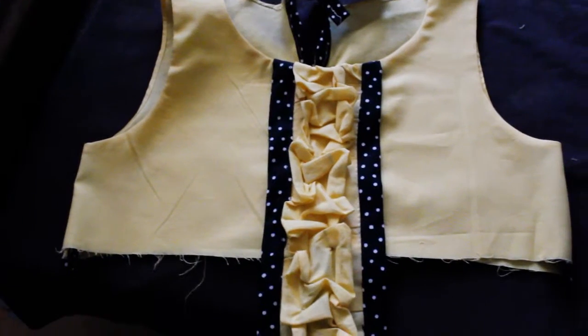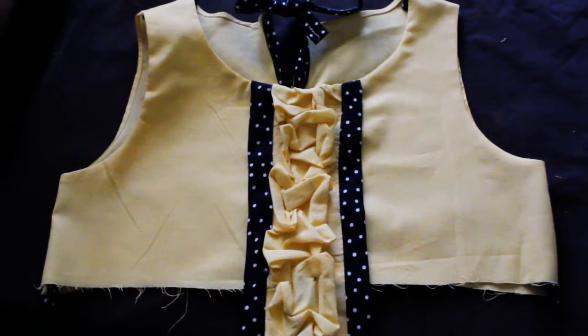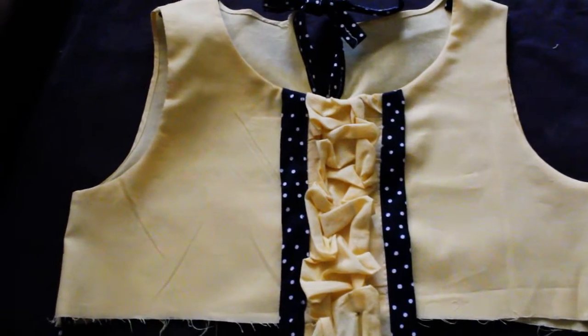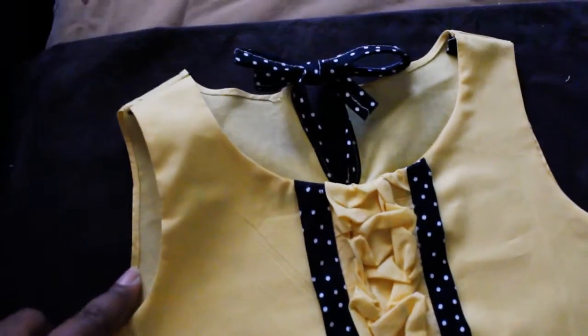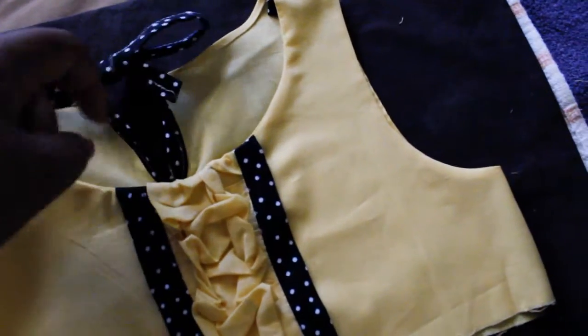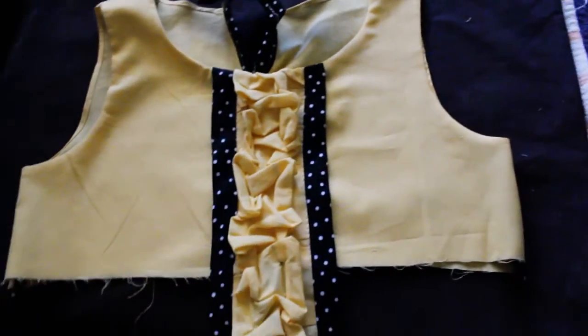Now you have it. The bodice is complete with the smocking detail vertically down the center. The front is lined. The back is hemmed with the little bow tie enclosure so that little girl's head can go through.